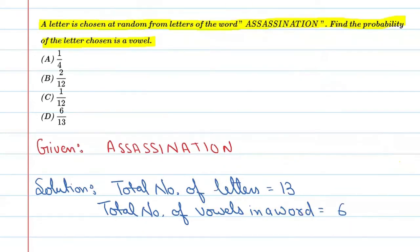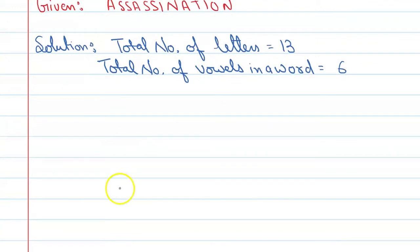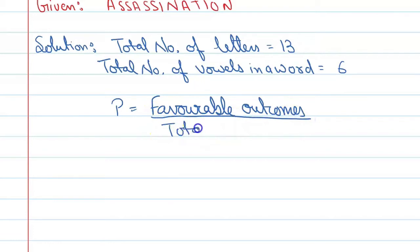Therefore, we know that probability is equal to favorable outcomes upon total outcomes. So the total number of vowels in the word is 6 upon 13. Alright.